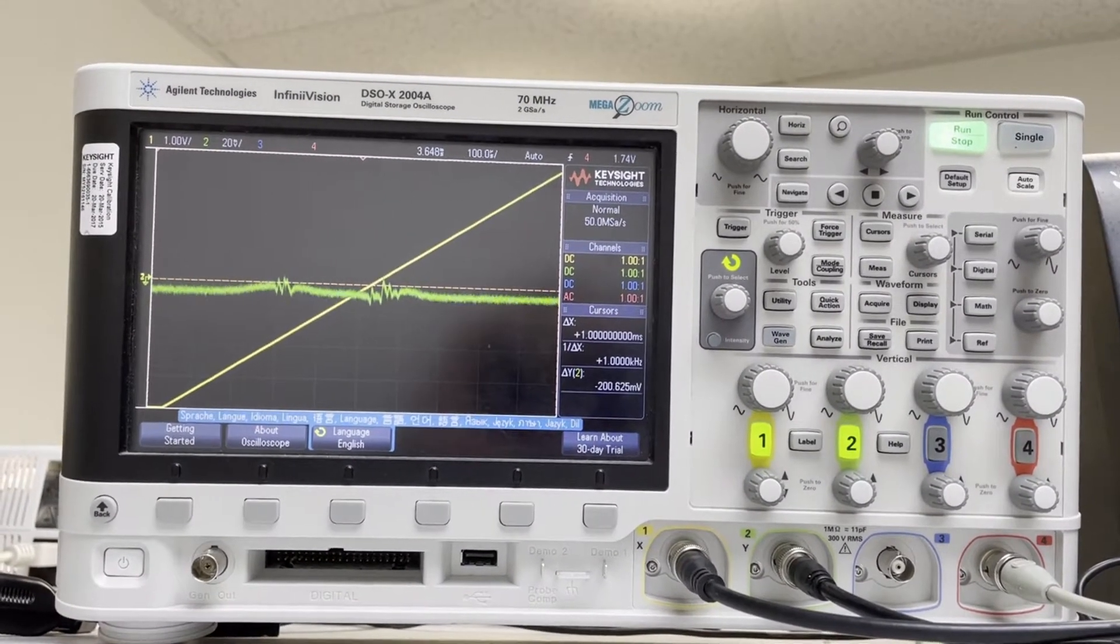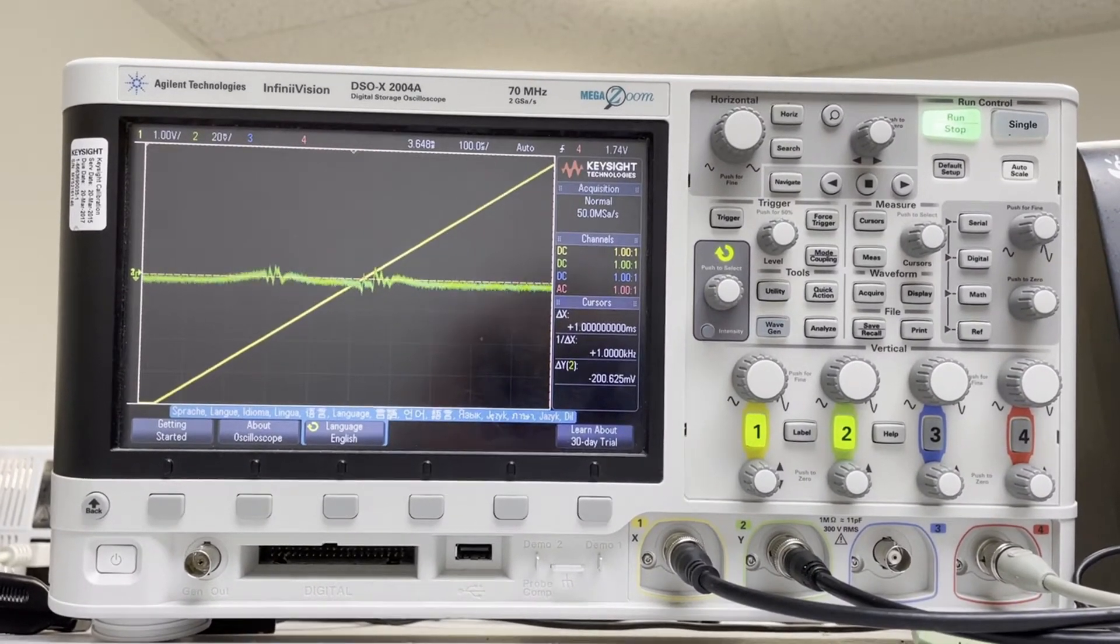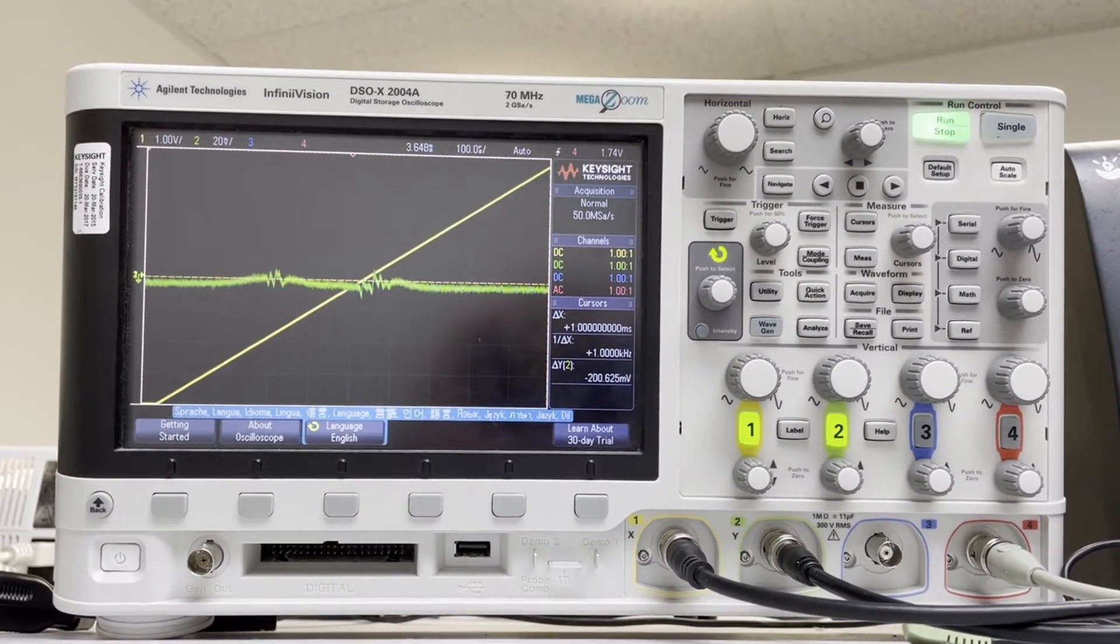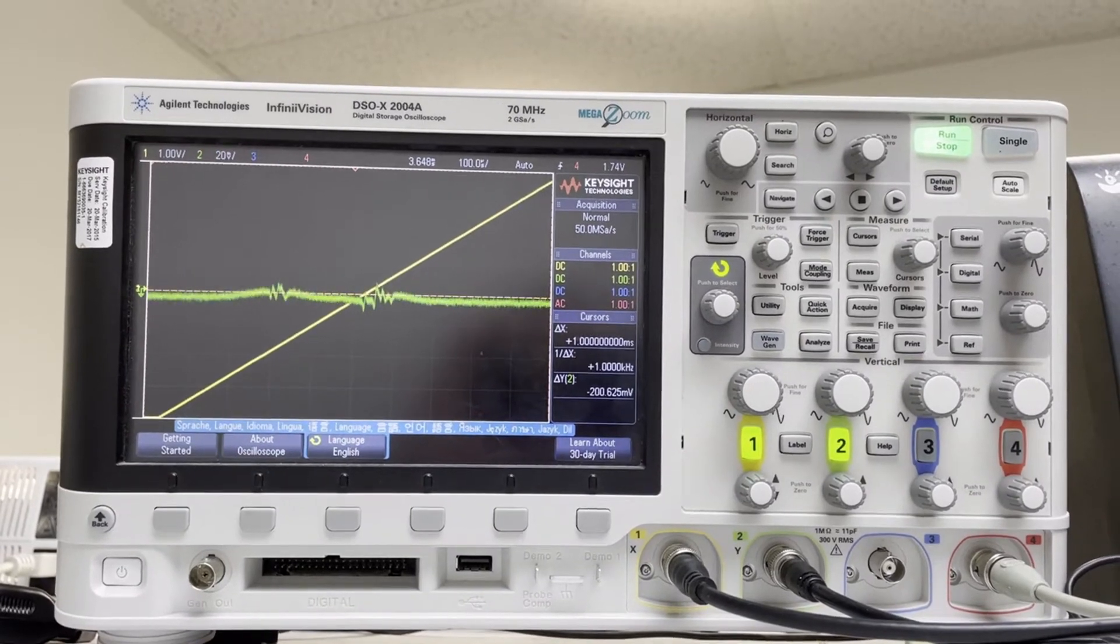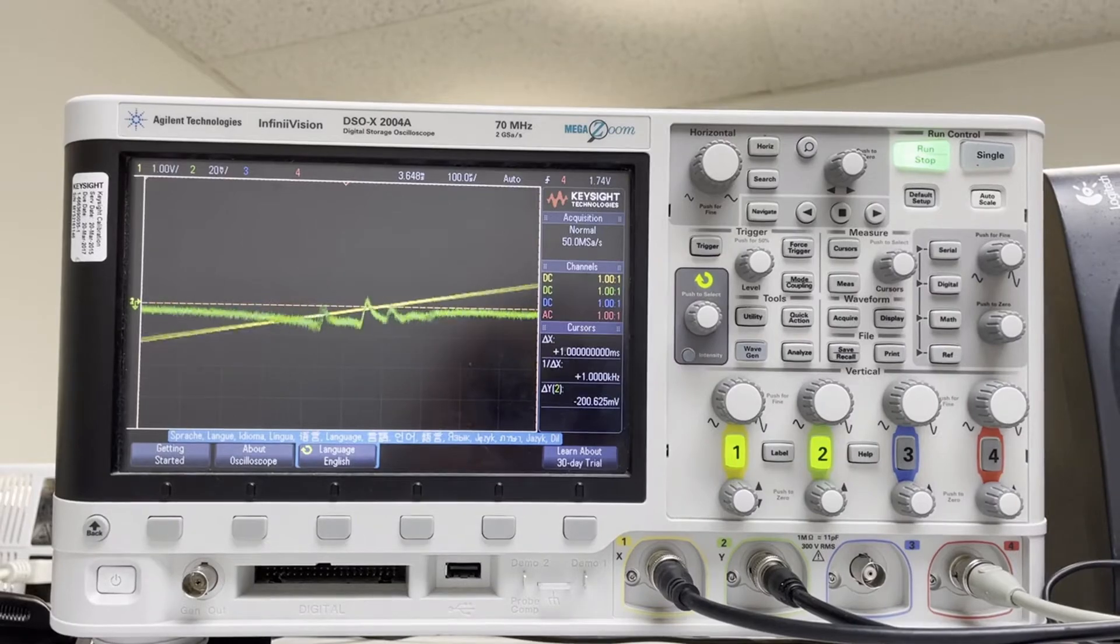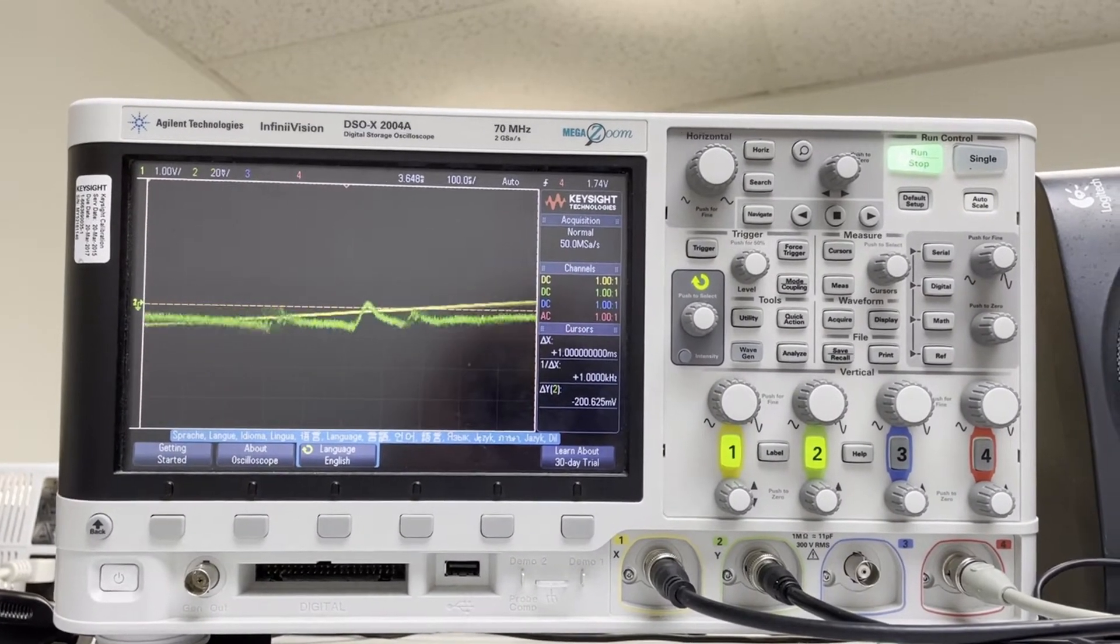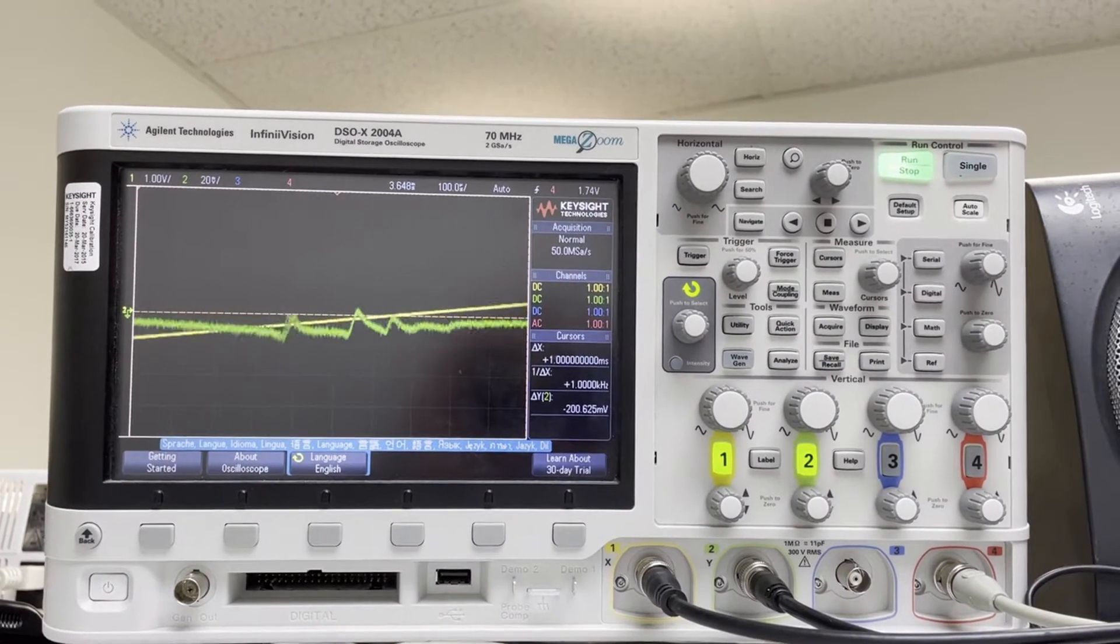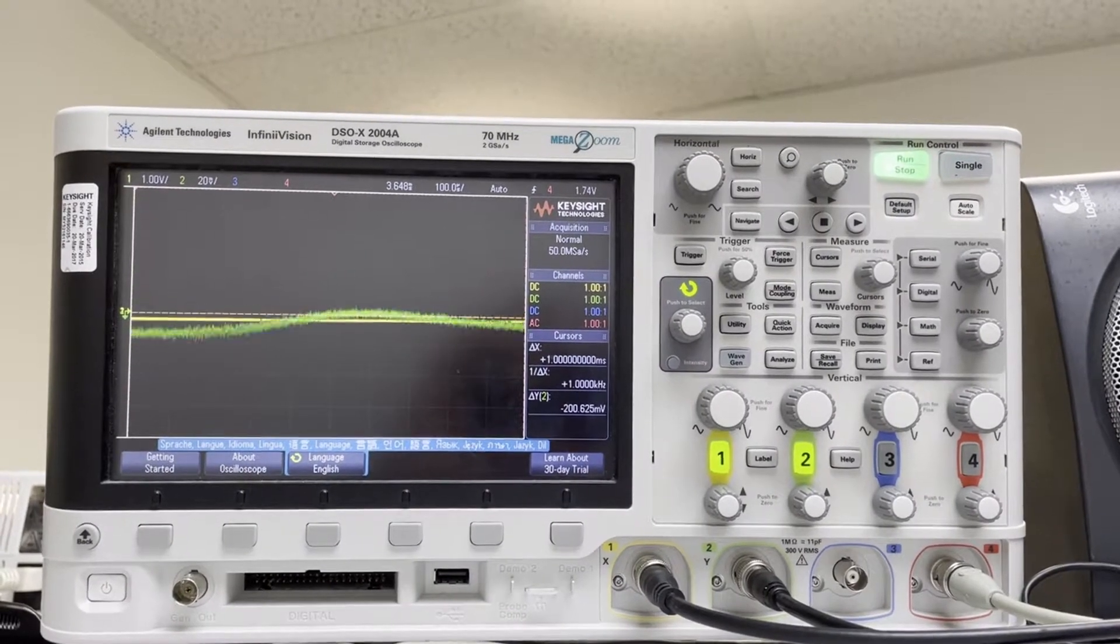Now, to get any lock you need two things: a slope and a zero crossing. I've lined our error signal up with the zero crossing as best as I can right now. And to find which slope we'll lock to, I'm going to turn the ramp amplitude up and down like this and look for the point on the screen where the green error signal doesn't move around.